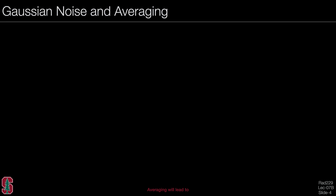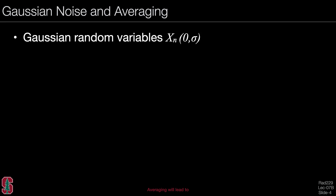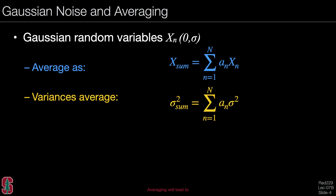Let us first look at Gaussian noise and averaging. We start with a set of Gaussian random variables x sub n, which have a mean of zero and some parameter sigma. We can take an average as a weighted sum, where the weights are a sub n and the random variables are x sub n. If we do this, the variances are also averaged by those same weights, so the overall variance of this sum is simply the sum of the weights times the variance.